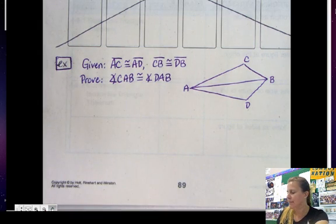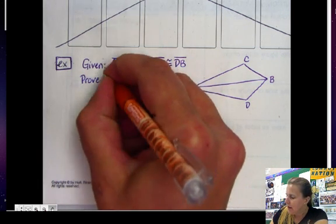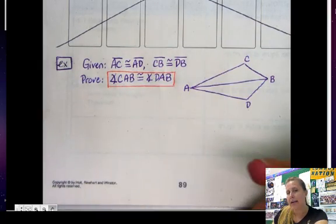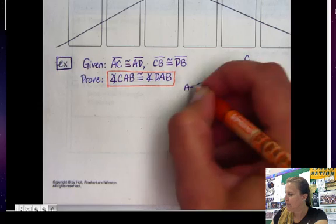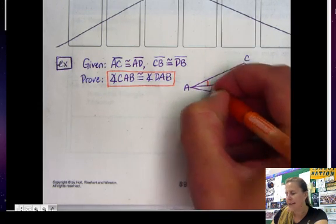So remember our steps to writing a proof. Start with your bright colored pencil and put a box around what we want to prove and draw it on the picture. So CAB is here and DAB is here. That's my goal.